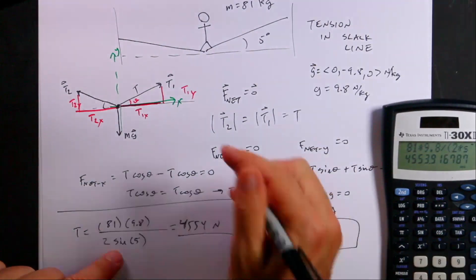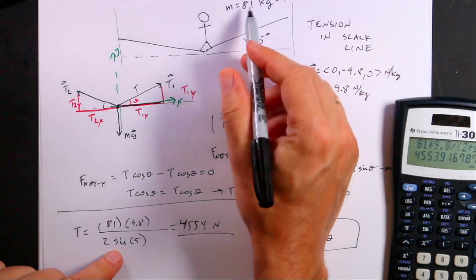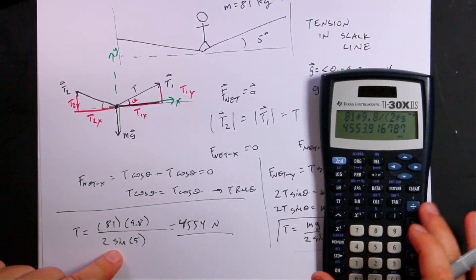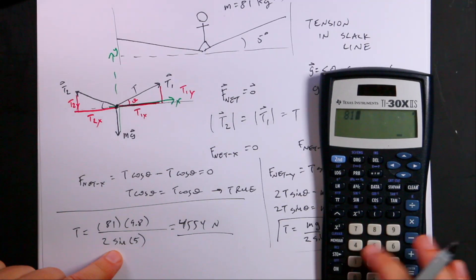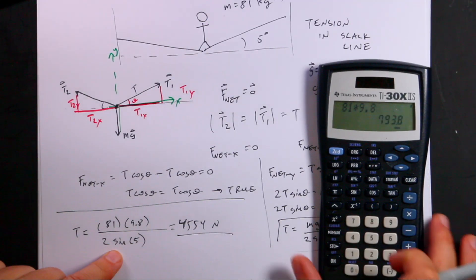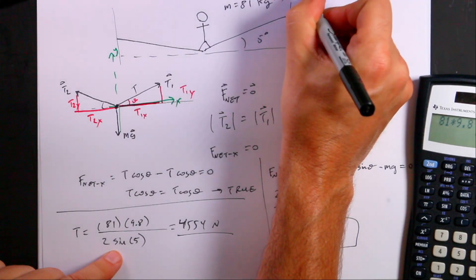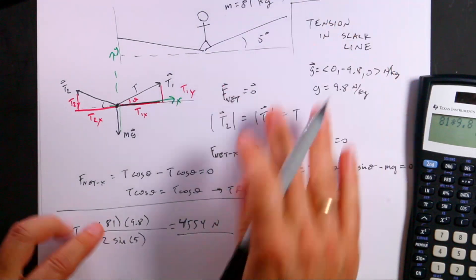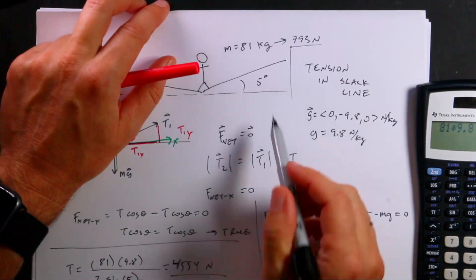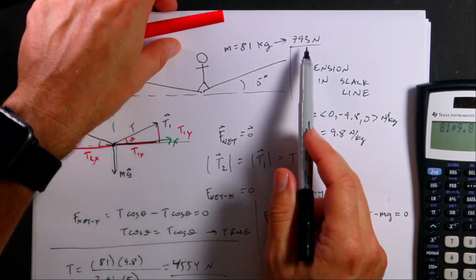And just as a comparison, if this is an 81 kilogram person, 81 times 9.8 is 793. So that's the weight. Oops, I'm sorry. You can't even see that.